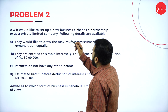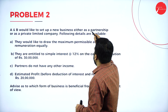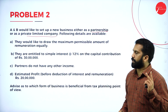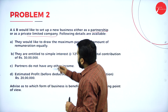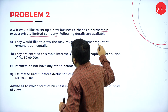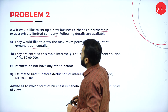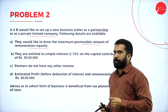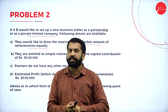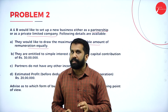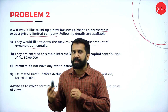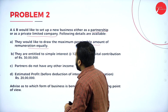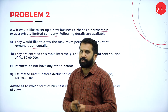AB would like to set up a new business, either as a partnership form or private limited company. First, they would like to draw the maximum permissible amount of remuneration equally. In this problem, the remuneration is not mentioned. In the previous problem — if you haven't watched, please go back to Session 8 — I mentioned that remuneration is 30,000 per month. But in this problem, remuneration is not mentioned.